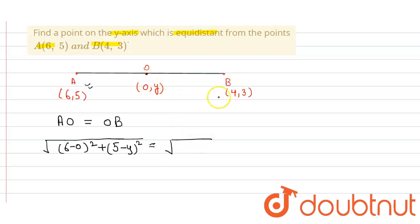Similarly, the OB distance will be equal to square root of (4 minus 0) square plus (3 minus y) square. Here we actually use the distance formula, which is equal to square root of (x2 minus x1) whole square plus (y2 minus y1) whole square.